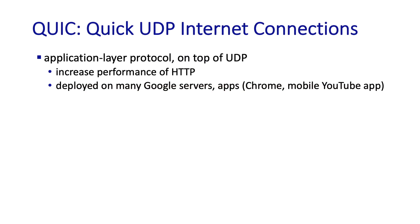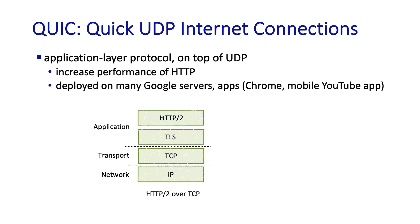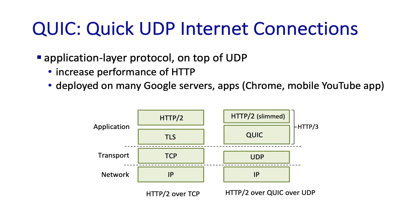QUIC, which stands for Quick UDP Internet Connections, is an application layer protocol that's meant to sit underneath HTTP and run over UDP, as we see here. It's already seeing widespread deployment on many Google servers, in Chrome, and in the mobile YouTube app. It's also in the process of being standardized in the IETF.